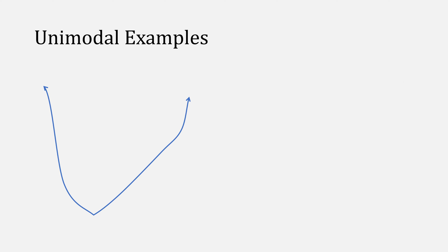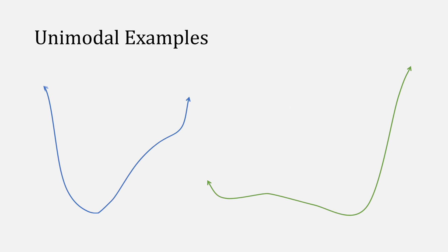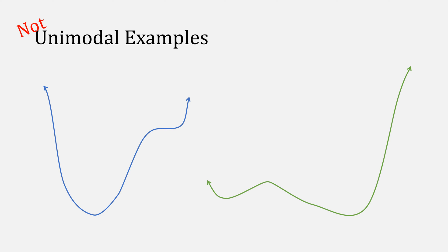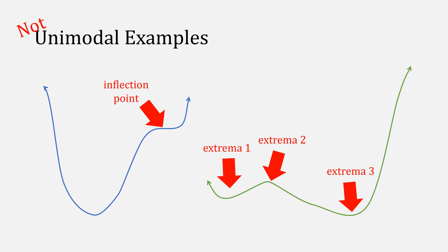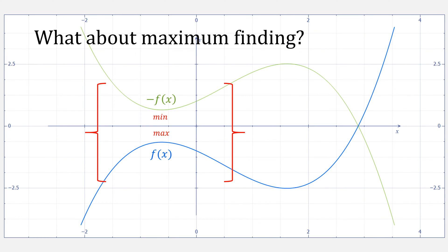Here are two examples of unimodal functions that only decrease to a point and then only increase. These would be examples of non-unimodal functions, such as this inflection point here, as well as multiple extrema in this example. Based on that definition of unimodal, there would be no way for us to find a maximum because that would be just the opposite — increasing to a point and then decreasing. However, if we negate our function, now that maximum becomes a minimum, decreasing to a point and then increasing.